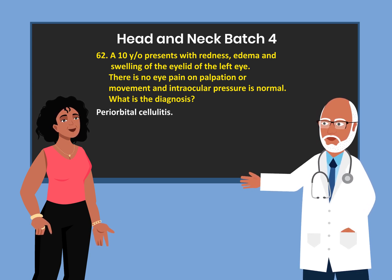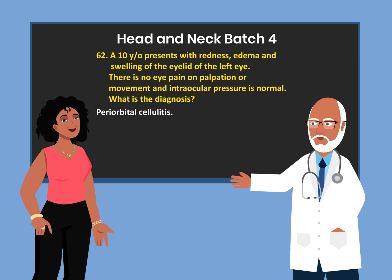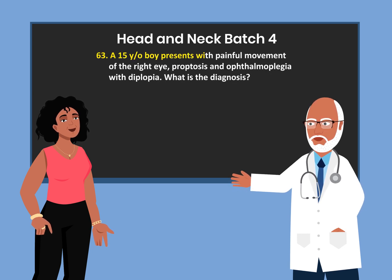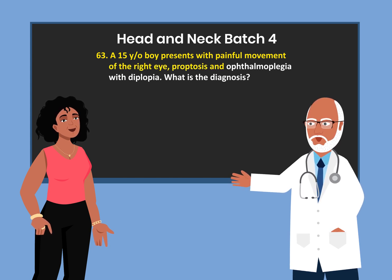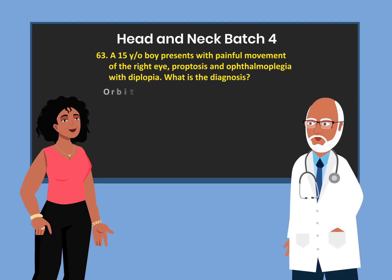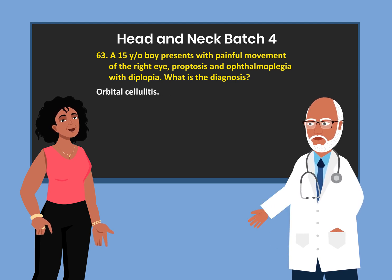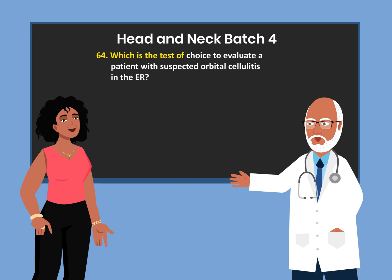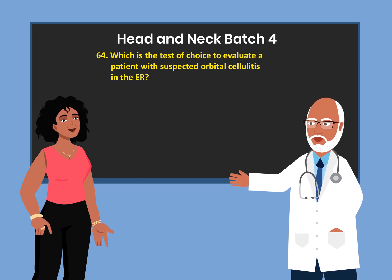Periorbital cellulitis or preseptal cellulitis. A 15-year-old boy presents with painful movement of the right eye, proptosis, and ophthalmoplegia with diplopia. What is the diagnosis? Orbital cellulitis. Which is the test of choice to evaluate a patient with suspected orbital cellulitis in the ER? Orbital CT or facial CT scan.